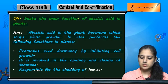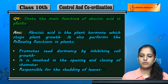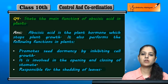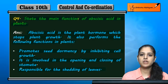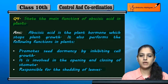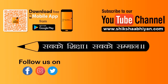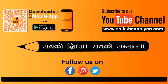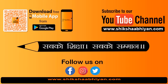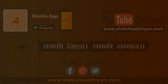It is responsible for the shedding of leaves. It plays a major role in the life span of leaves, and when leaves are shed, abscisic acid plays an active role in that effect.